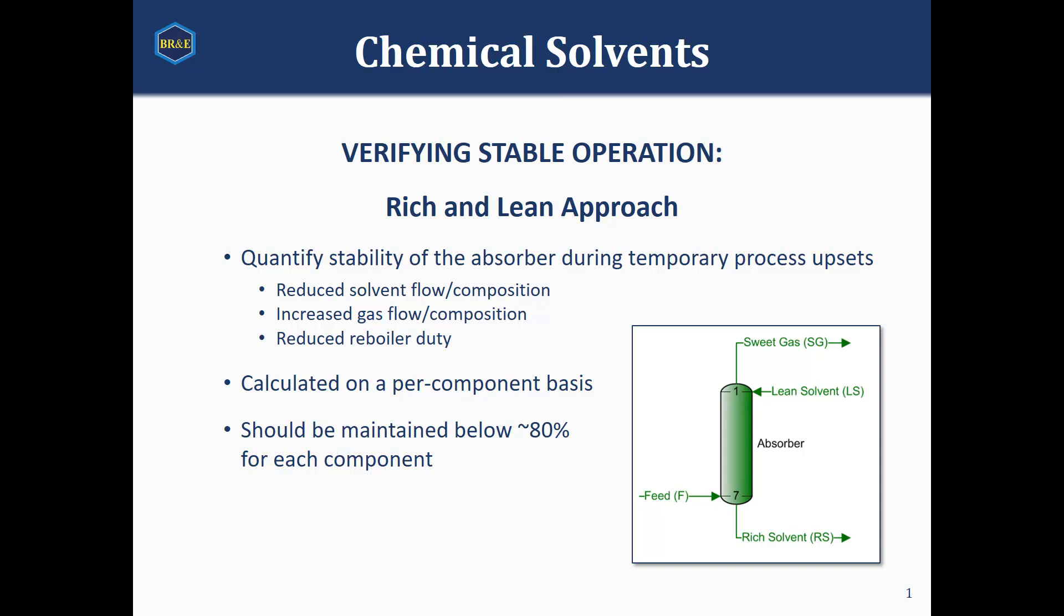The concept here with the rich and lean approach is that these two calculations are going to help us understand how stable our current operation is for our absorber. When simulating this process we're going to determine what flow rates we need of our amine, how our regenerator needs to work, and we're going to get our sweet gas down to our necessary spec. But we want to make sure that we've chosen conditions that are able to handle any upsets that are going to occur.